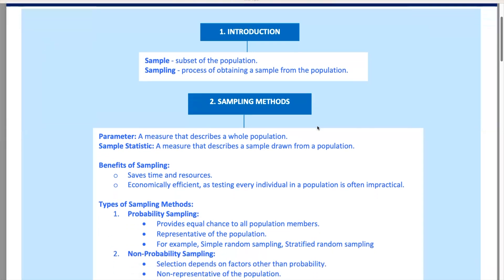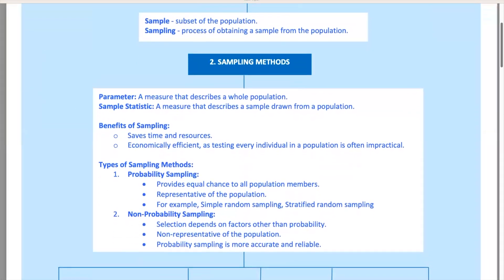Sampling is the process of obtaining that sample. Simple enough, right? Cool. Let's move on. First, let's talk about some basic terms. A parameter is a quantity that describes a population. Think of it as a big picture statistic. Sample statistics, on the other hand, describe the sample. They're our best guess about what's going on in the population based on that handful of jelly beans we grabbed.